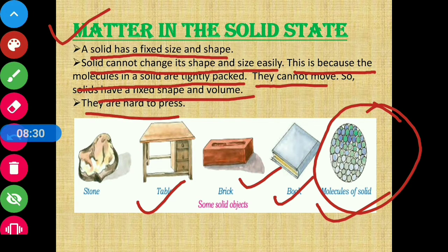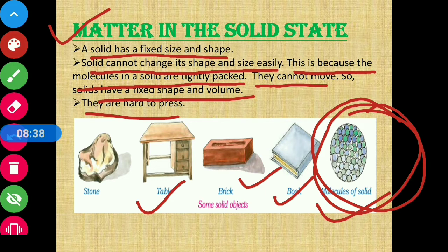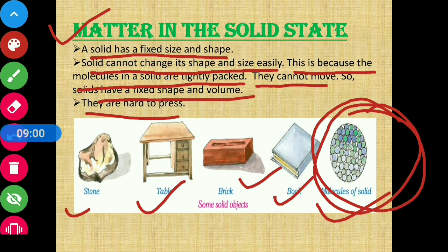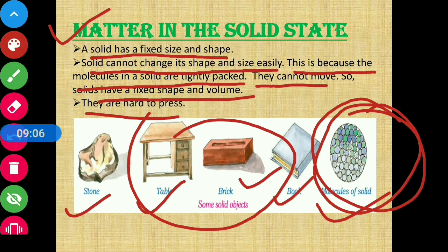Solids are hard and hard to press. When molecules are so close together, you cannot press the solid — it cannot be compressed. It is like a bag already full of books — you cannot put more books in it. The molecules are so tightly packed that trying to press or change the shape is not possible. It is very hard. Examples of solids: stone, table, brick, book.